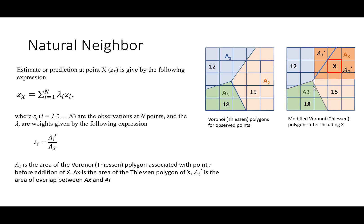The next method is natural neighbor. Natural neighbor also has an expression similar to inverse distance weighting — the prediction at point x is the summation of the product of weight and observation at any point i — but the weight is calculated based on area. We first create Thiessen polygons for all observation points: A1 is the Thiessen polygon for observation 12, A2 for observation 15, and A3 for observation 18.